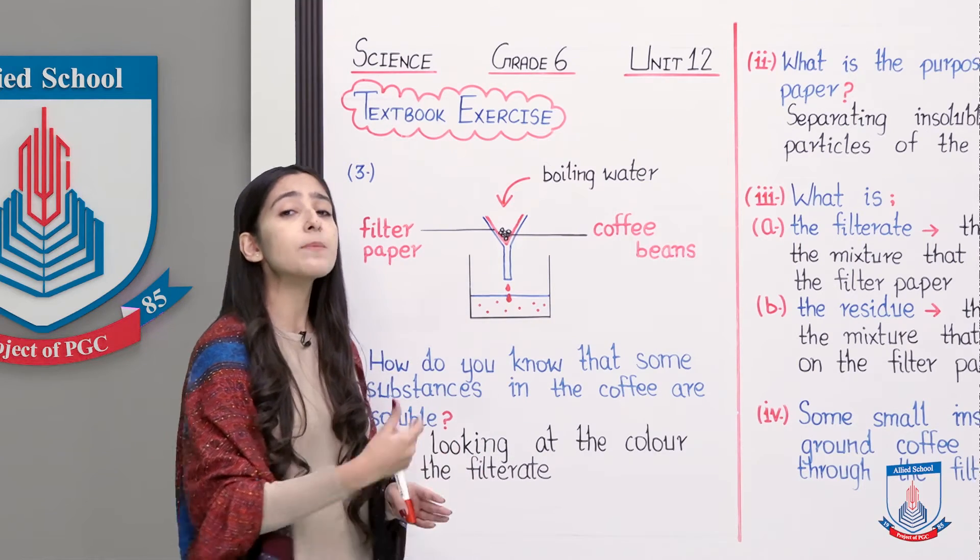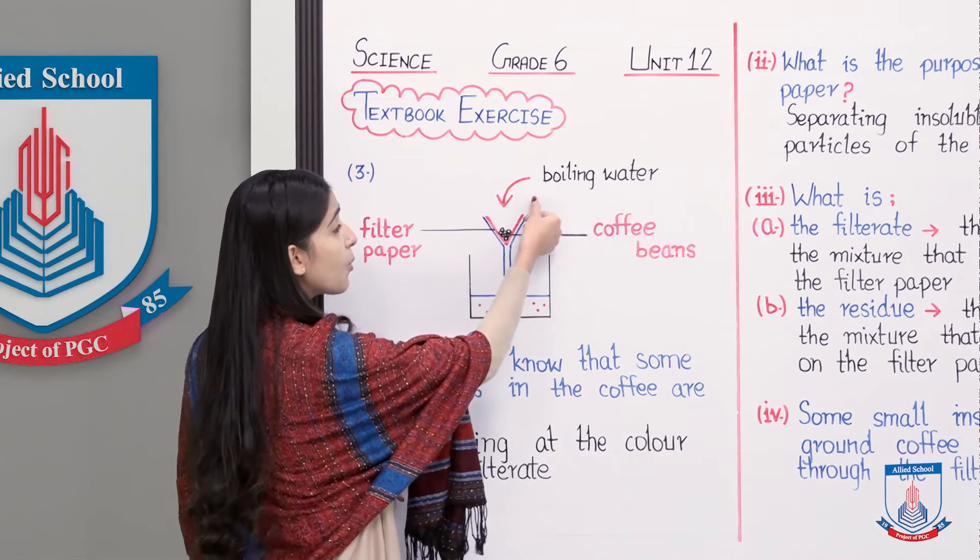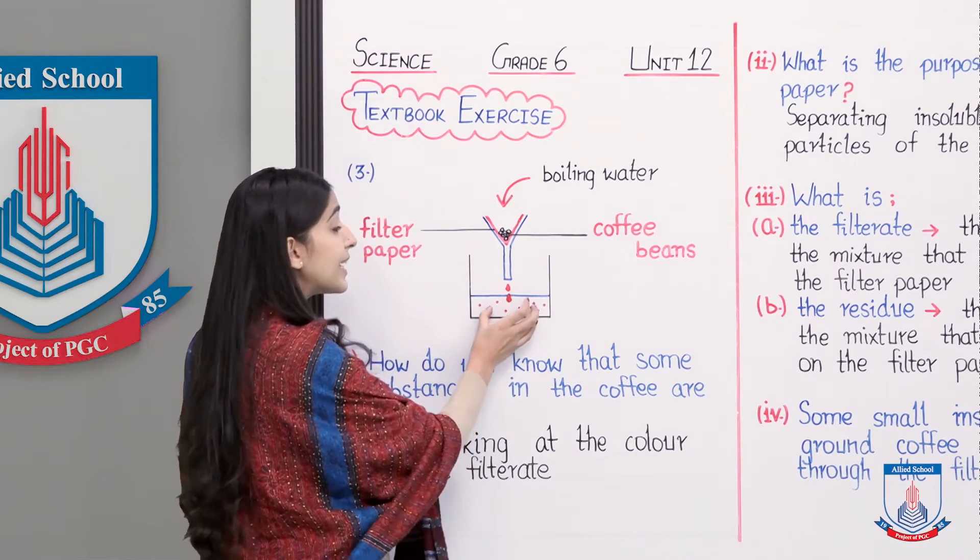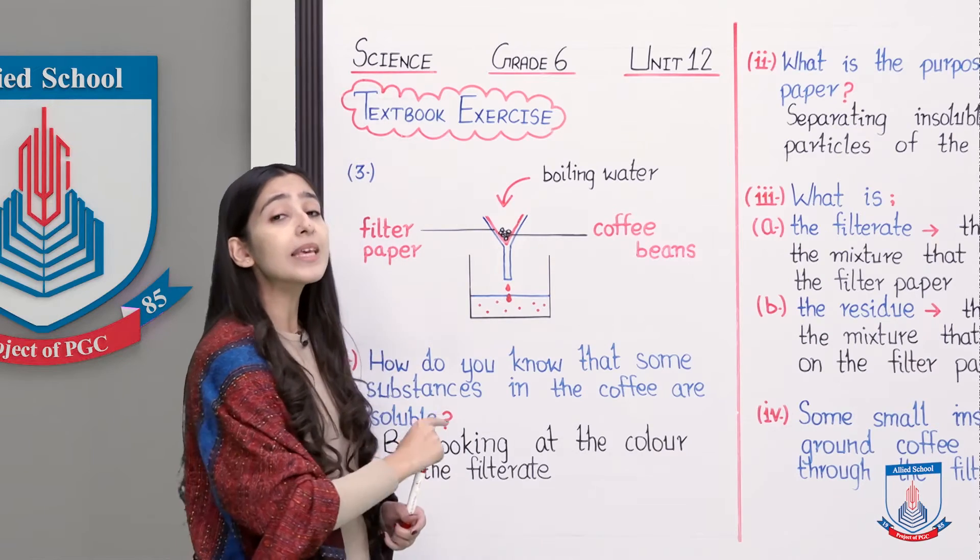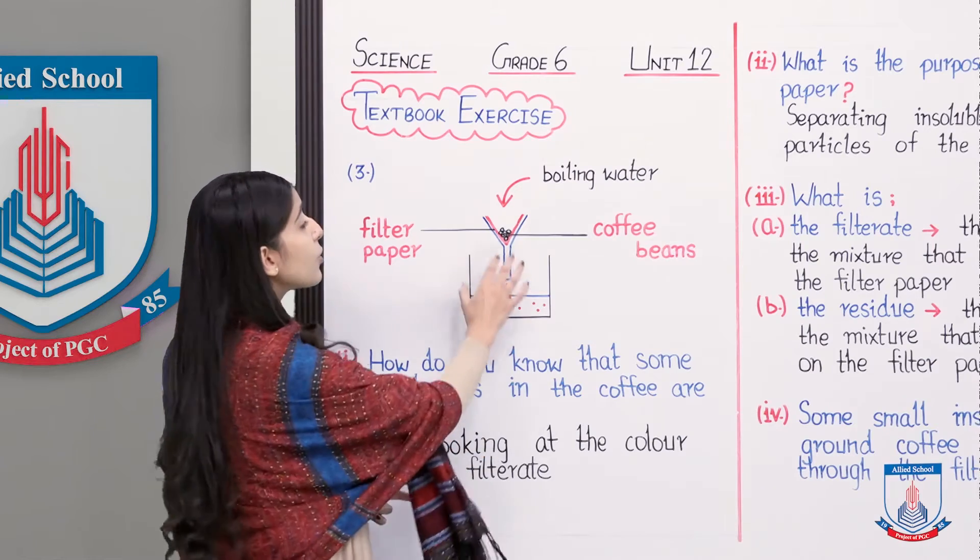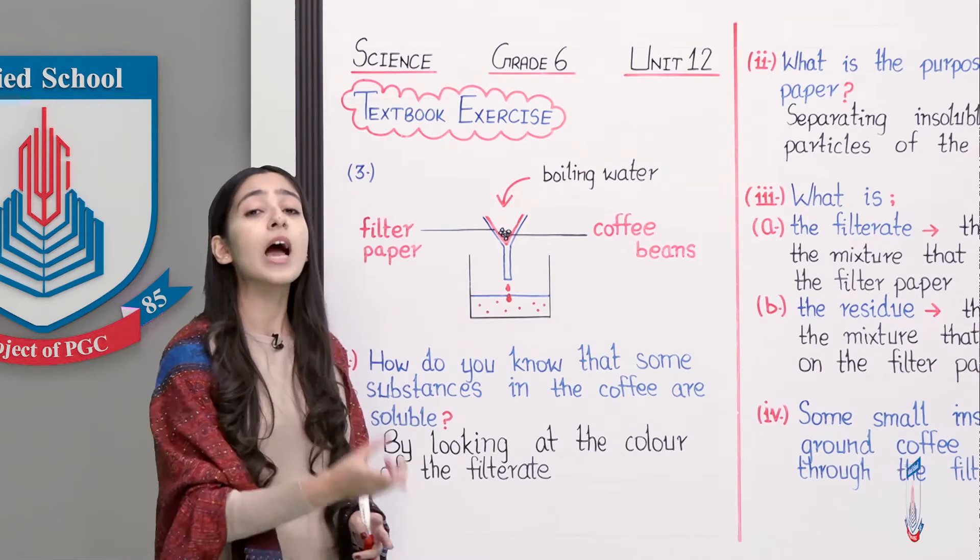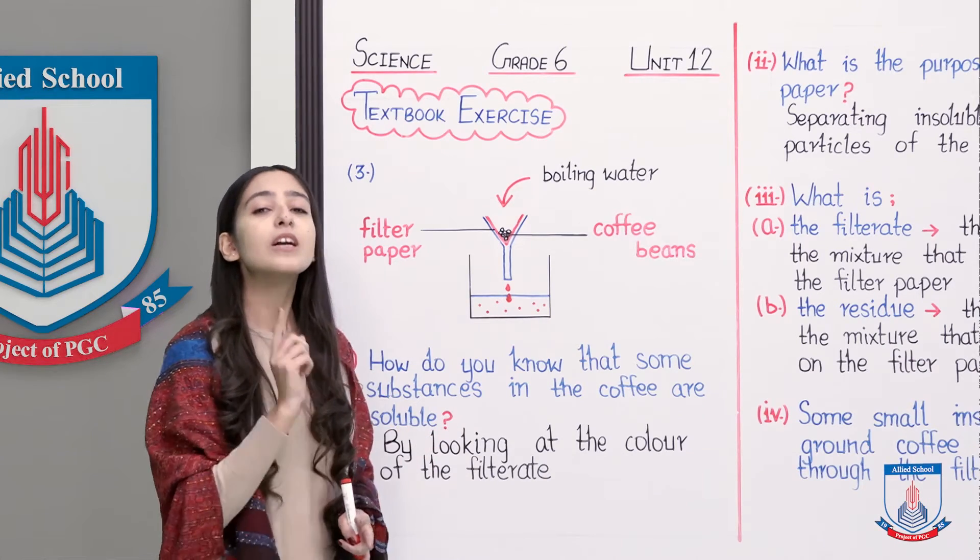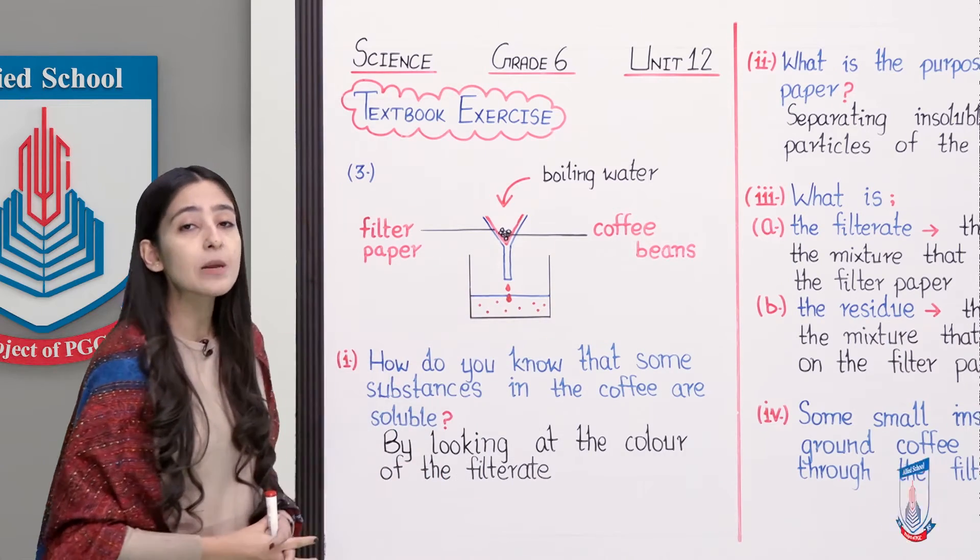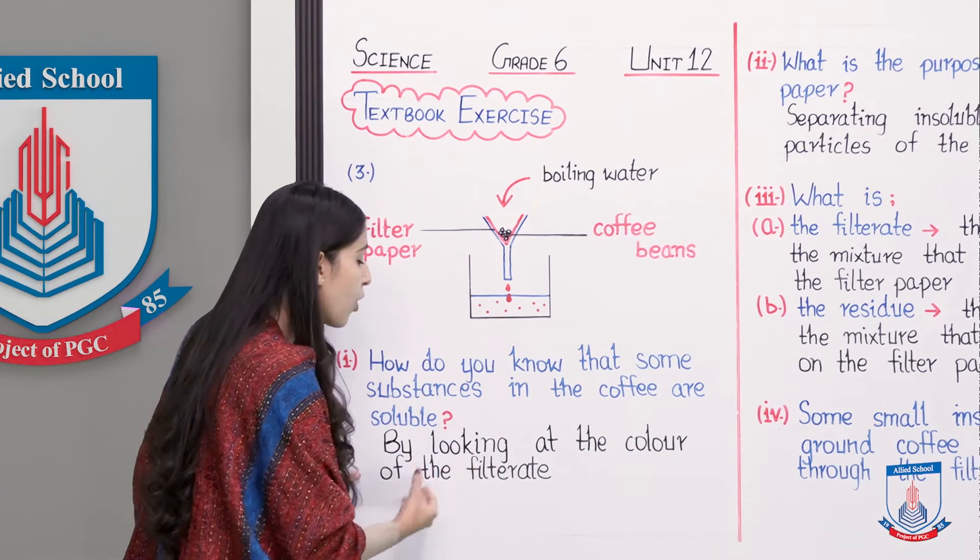Now let's see what is our first question related to this diagram. How do you know that some substances in the coffee are soluble? How did we find out that some particles in coffee are soluble? As you know, what stays on the filter paper is insoluble, and what passes through the filter paper is soluble.